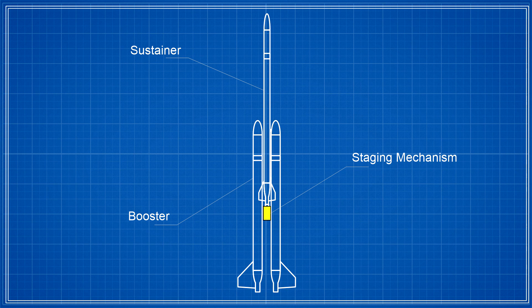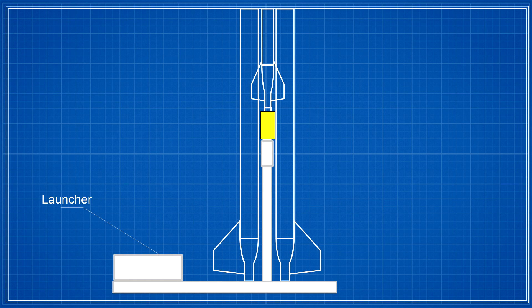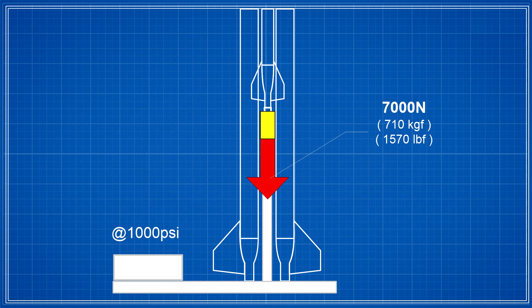There are two critical functions this mechanism must serve. First, it's used to hold down the entire rocket while it's on the launch pad. At 1,000 psi the booster will exert a force of around 7,000 newtons on this mechanism. The boosters' nozzles won't be held down individually like they were with the Polaron G2 rocket.